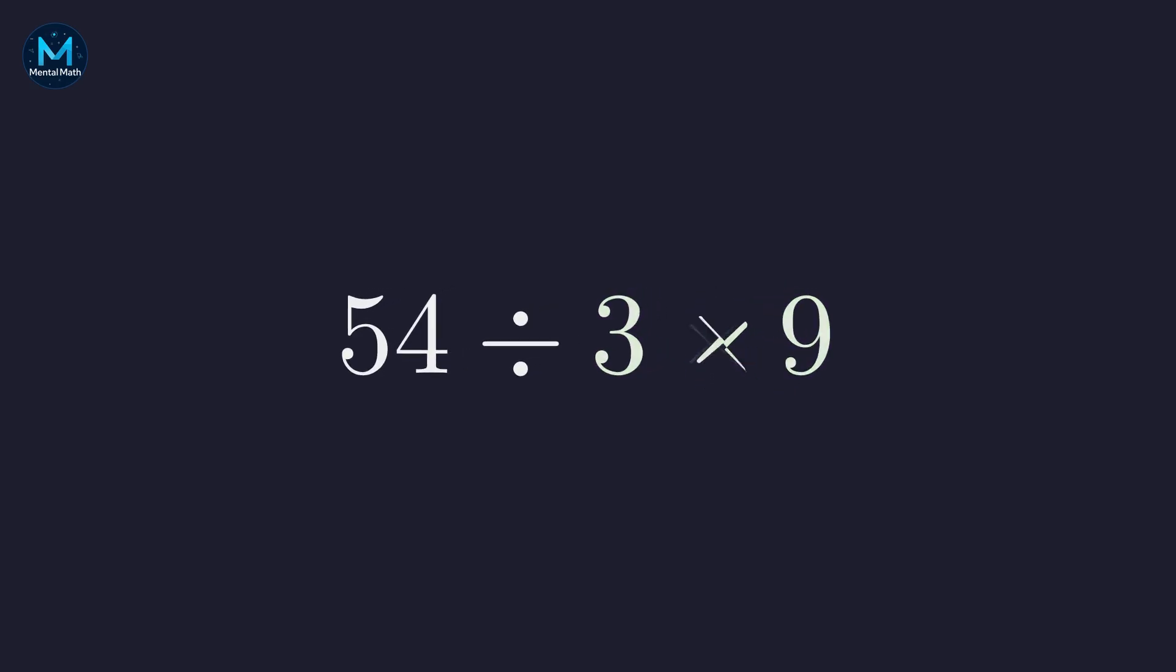Here's the key moment. Division and multiplication have the same priority, so we work left to right. Division comes first, simply because it's on the left. 54 divided by 3 gives us 18, leaving us with this final multiplication.